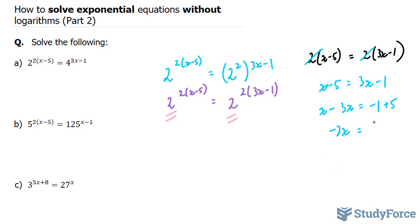x minus 3x gives us negative 2x. And on the right side, we have positive 4. Therefore, x is equal to 4 divided by negative 2, which is equal to negative 2. Negative 2 is the solution to our equation.